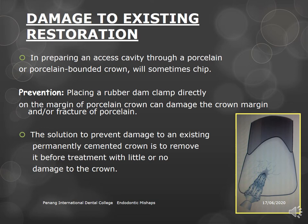Only in unavoidable circumstances should access be done through the crown. A disadvantage of doing so is that you cannot clearly see the pulp chamber or determine the axial inclination of the crown relative to the root. It is always preferable to remove the crown and do the access cavity for root canal treatment.